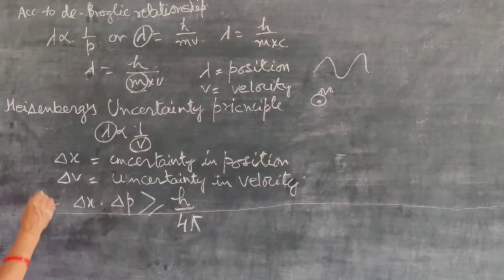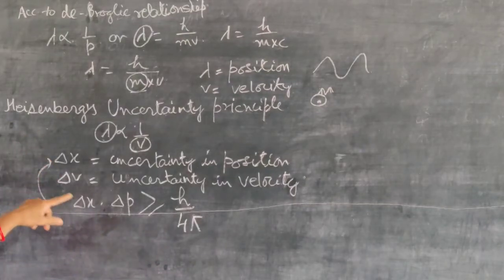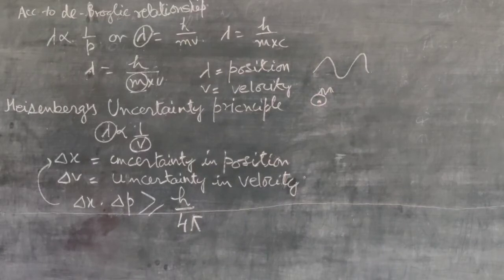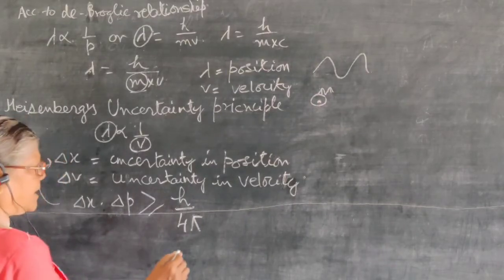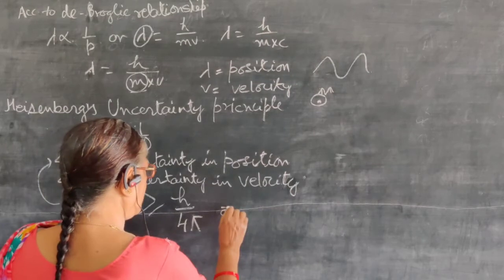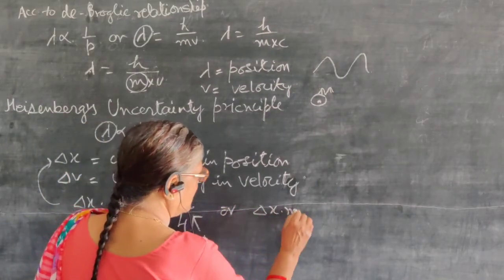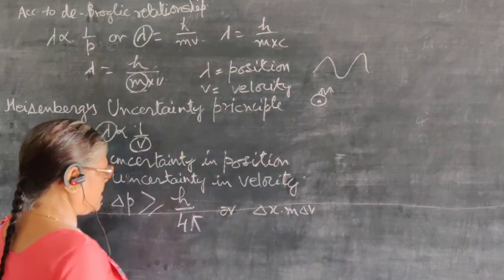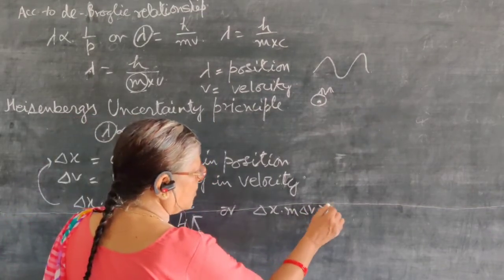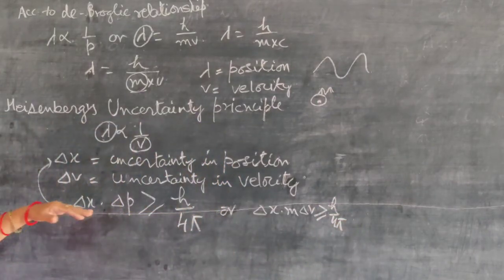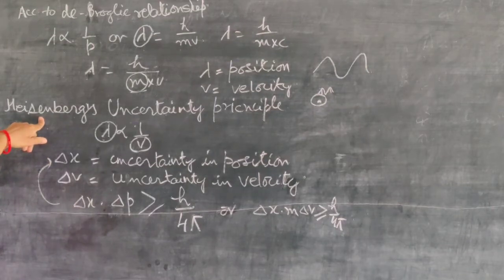Delta x is the uncertainty in position, delta p is the uncertainty in momentum, and h is Planck's constant, while 4 and pi are constants. We can also write this as delta x into m delta v, because mass is constant, which is greater than or equal to h upon 4 pi. This is the mathematical representation of the Heisenberg uncertainty principle.